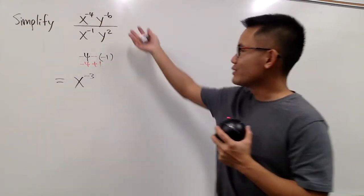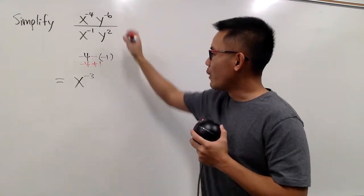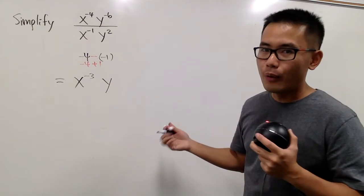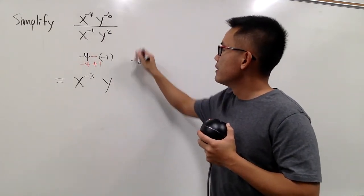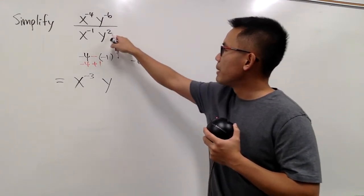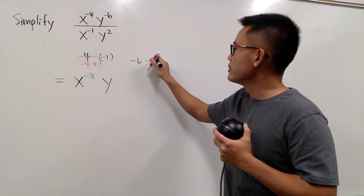And let's do another one, because we have to do the same for y. For y, we write it down, and then for the new power, let's take negative 6 for the top power, and we have to minus the bottom power, which is just a 2.